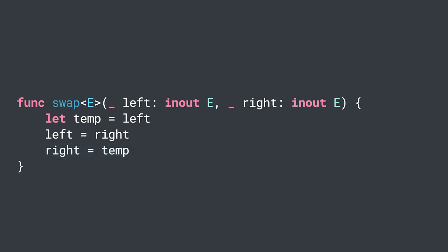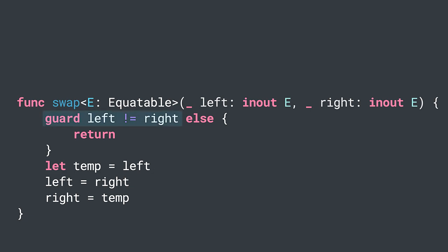Now, this isn't the most efficient swap implementation. One quick optimization would be to prevent the swapping of identical arguments. So let's add a guard statement and check if the arguments are different. Otherwise, we exit the function.